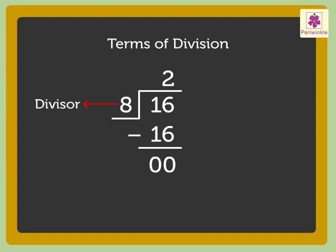The number to be divided is called the dividend. Here, number 16 is the dividend. The answer that we get on dividing the numbers is called the quotient. Here, number 2 is the quotient.